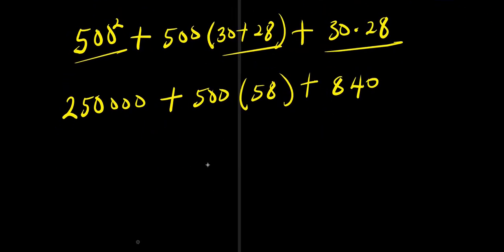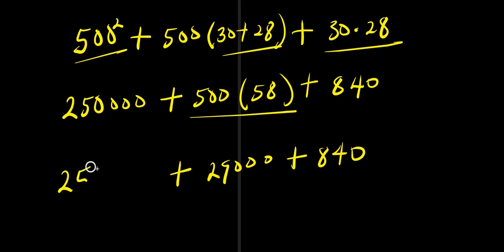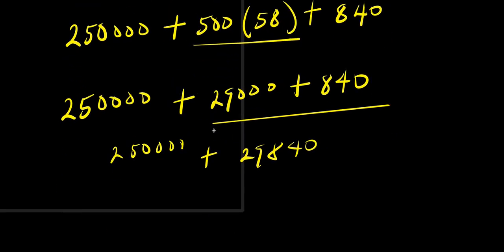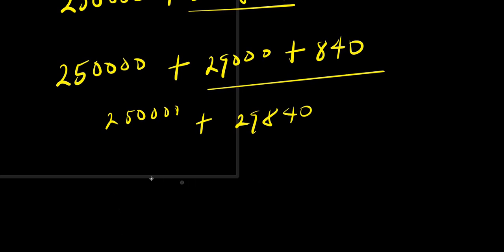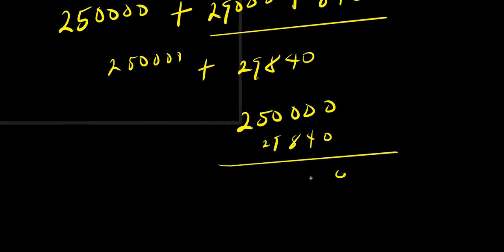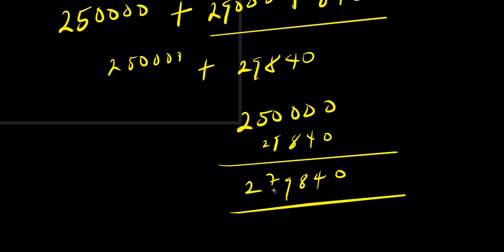Now the next thing is to add these up. 500 times 58 gives 29,000, plus 840. 29,000 plus 840 gives 29,840, plus 250,000. So if we add up, we are going to have 279,840. Let's verify: 250,000 plus 29,840 — that gives us 279,840, just like what I said earlier.